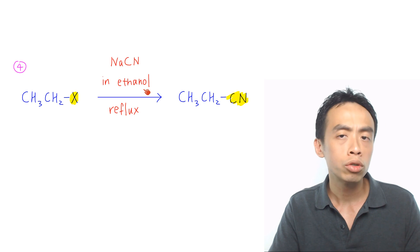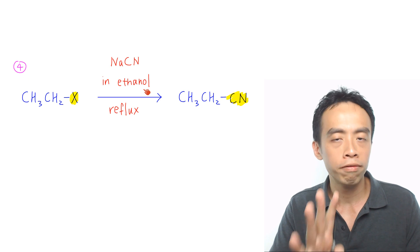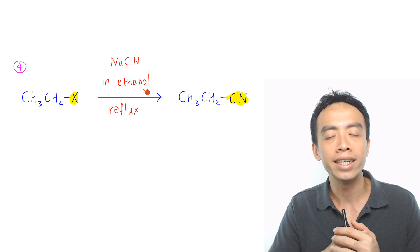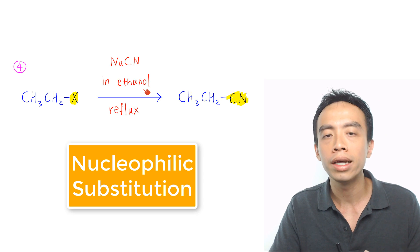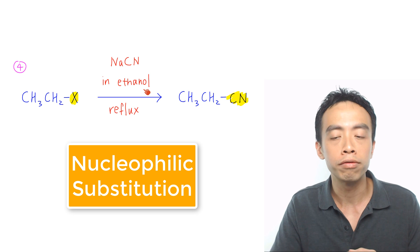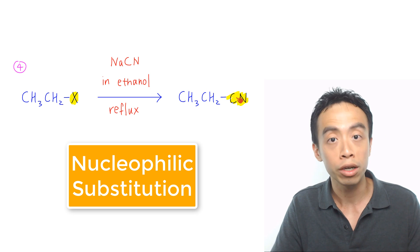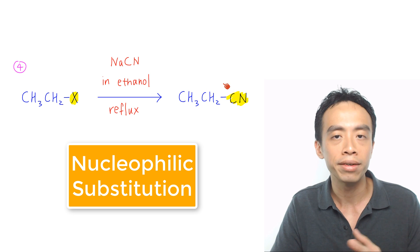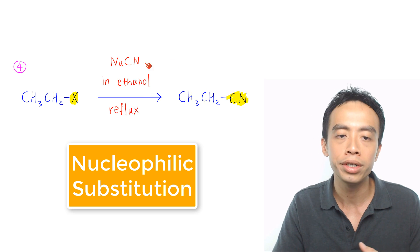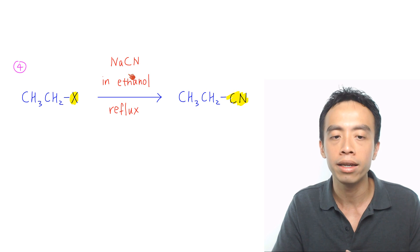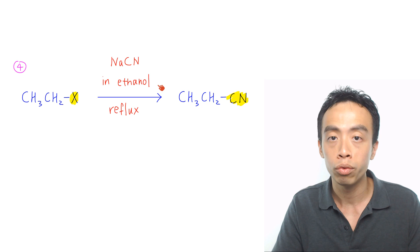Must-know reaction number 4 is again a nucleophilic substitution to form our nitrile. This is done using NaCN in ethanol reflux.